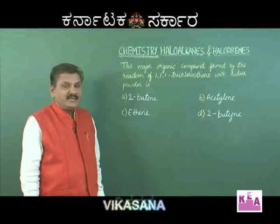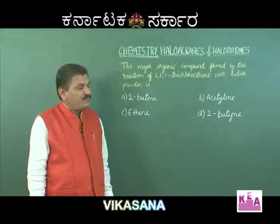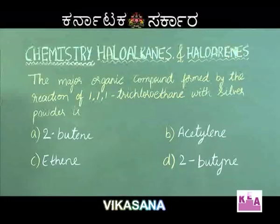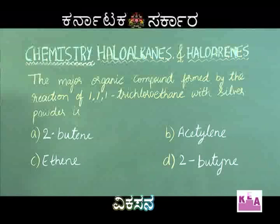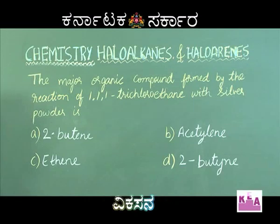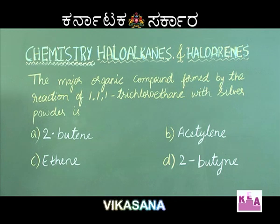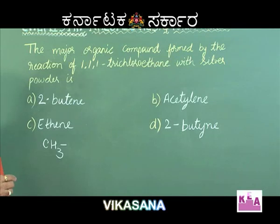The next question is related to polyhalogen compounds. The major organic compound formed by the reaction of 1,1,1-trichloroethane with silver powder is — option A: 2-butene; option B: acetylene; option C: ethane; option D: 2-butyne. To predict the product, it is better to write the reaction.